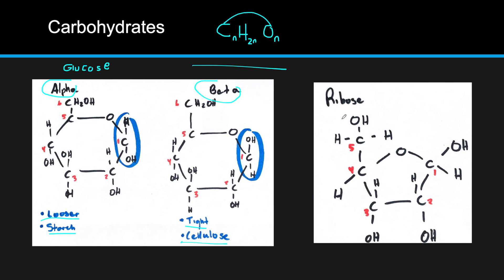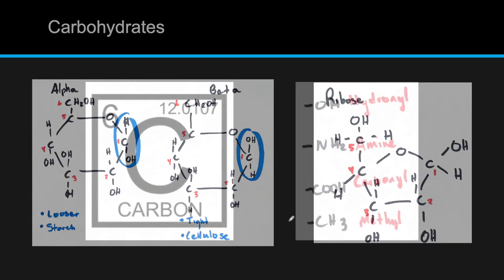The last molecule you'll need to know — and you should be able to draw all three of these — is ribose. Ribose is used in DNA and RNA, ribonucleic acid, and serves as the sugar backbone. Just be able to draw these — maybe pause the video and draw those.